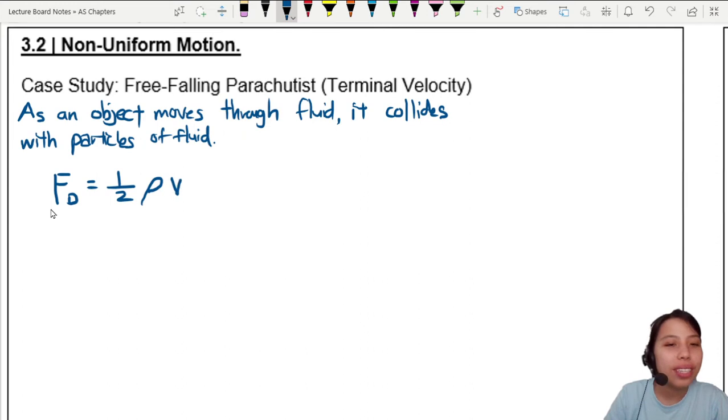Velocity of the object flying through the fluid, we call this a V squared, and C and cross-section area. What is all these things?